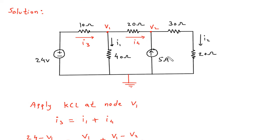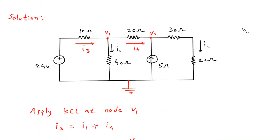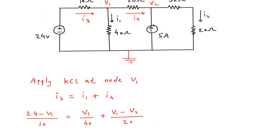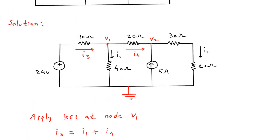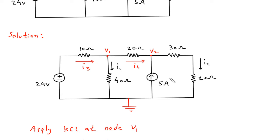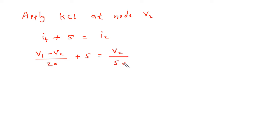The entering current at node V2 is I4 plus 5A, which equals the leaving current I2. I4 is (V1 minus V2)/20, so (V1 minus V2)/20 plus 5 equals I2. I2 is V2 by 50, since the parallel combination of 30 and 20 ohms gives 50 ohms. This gives V1/20 minus V2/20 plus 5 minus V2/50 equals 0.